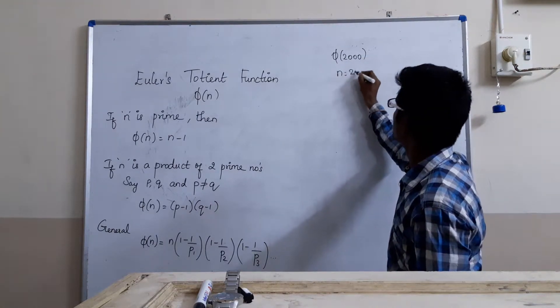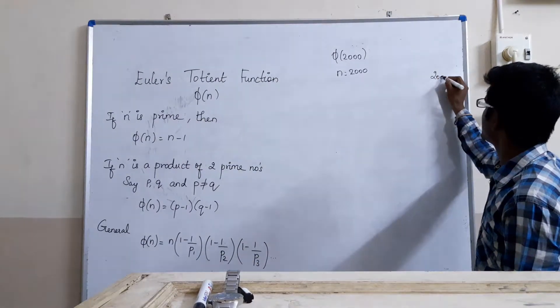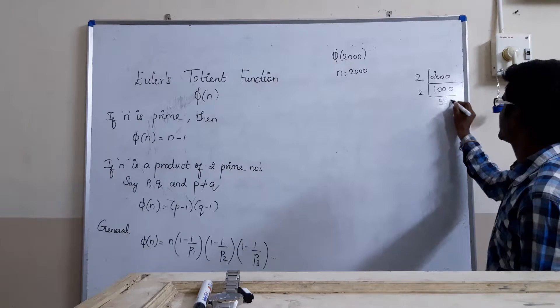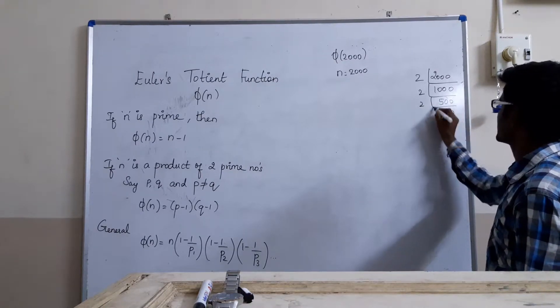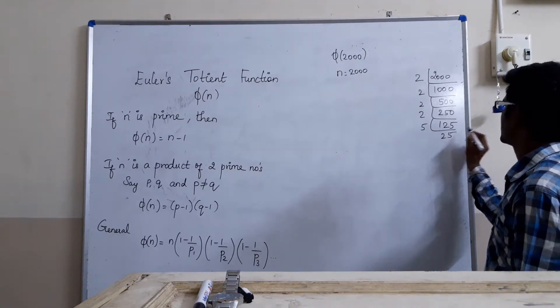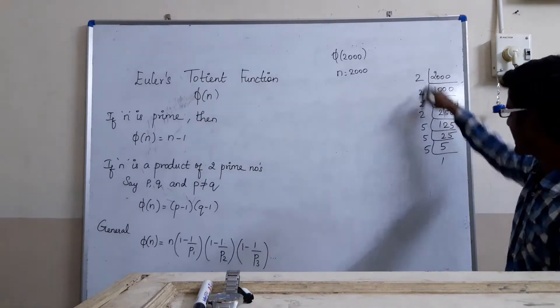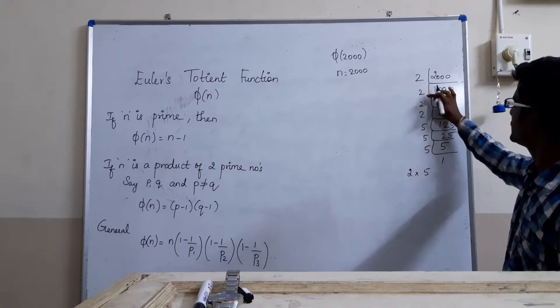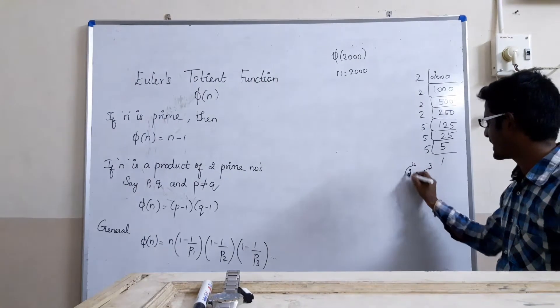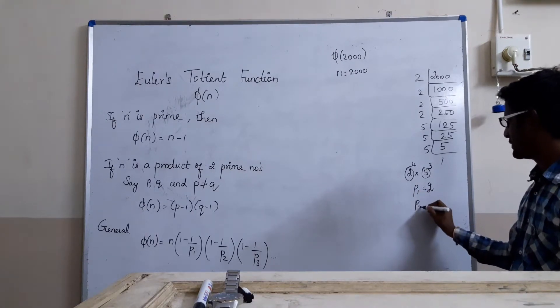We will take the general one where phi of n can be solved as phi of 2000. Here, n equals 2000. Now, we will find out all the prime factors involved in this. So if you see 2000, we will start with 2, 1000 times 2, 500 times 2, 250 times 2, 125 times 5, 25 times 5, 5 times 5. Now, the prime numbers involved are 2 and 5 only. So 2 to the power 4 and 5 to the power 3. We do not want the powers because we are concerned only about the prime numbers. So p1 equals 2 and p2 equals 5.